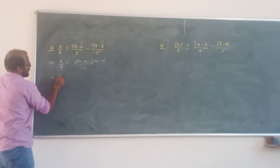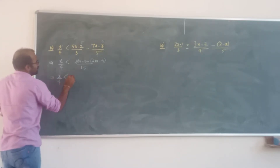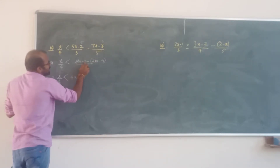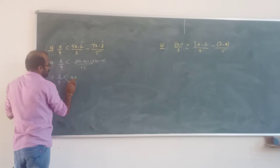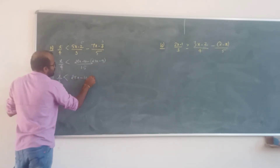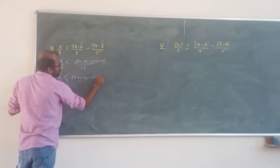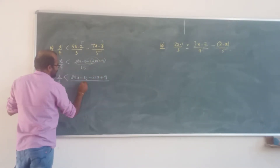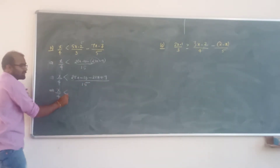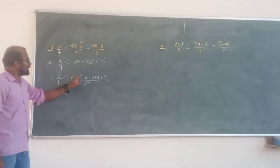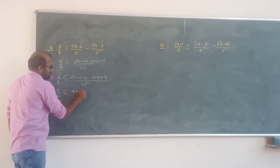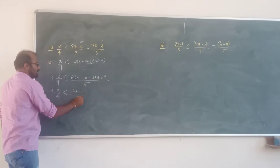x by 4 less than 25x minus 21x, which is 4x, minus 10, minus off minus 9 is plus 9. So 2 sevens are 21x. 5 plus 9 is... 4. x by 4 less than 25x minus 21x equals 4x. Minus 10 plus 9 is minus 1, divided by 15.